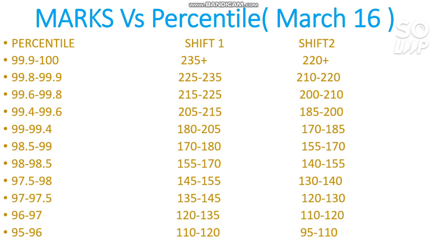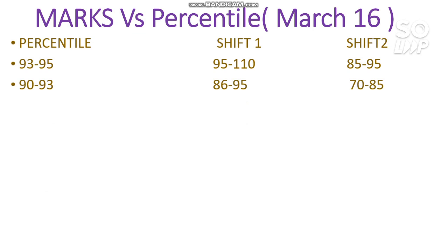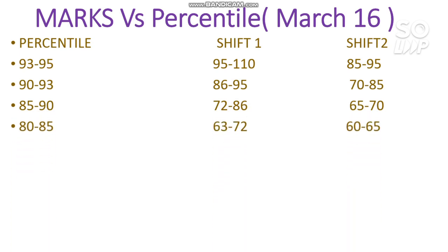For 95 to 96 percentile you need to score 110 to 120 for Shift 1 and 90 to 95 for Shift 2. For 90 to 93 percentile you need to score 86 to 95 in Shift 1 and 70 to 85 in Shift 2. For 85 to 90 percentile you need to score 72 to 86 in Shift 1 and 65 to 70 in Shift 2.